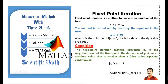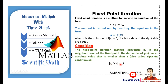The fixed point iteration method converges if, in the neighborhood of the fixed point, the derivative of g(x) has an absolute value smaller than 1 — also called Lipschitz continuous. So the condition is |g'(x)| < 1. We take the derivative of g(x), substitute the value of x, and check whether the absolute value is less than 1.